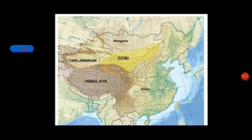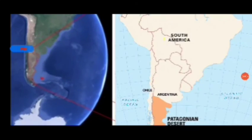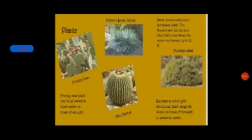Where are these deserts? The Gobi Desert is located just south of Mongolia and north of the Himalayan region. In South America, the Patagonian Desert is found in Argentina. The plants in these regions include prickly pear, desert spoon cactus, ball cactus, etc.